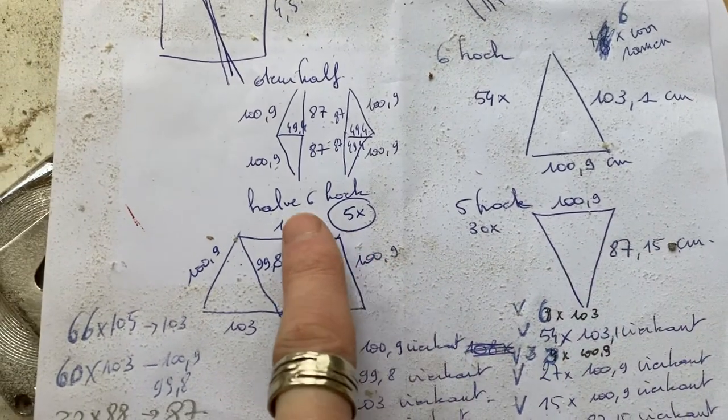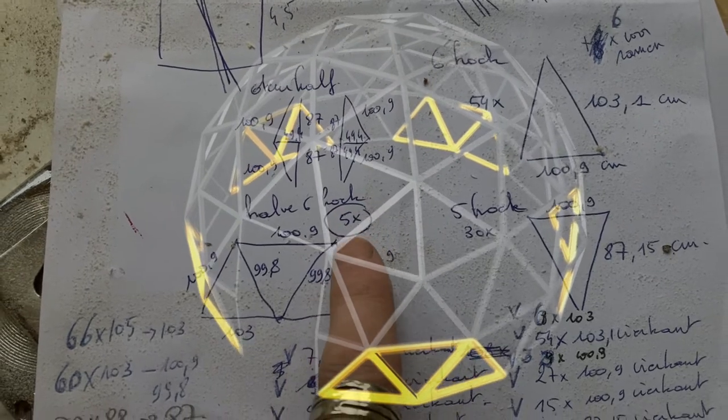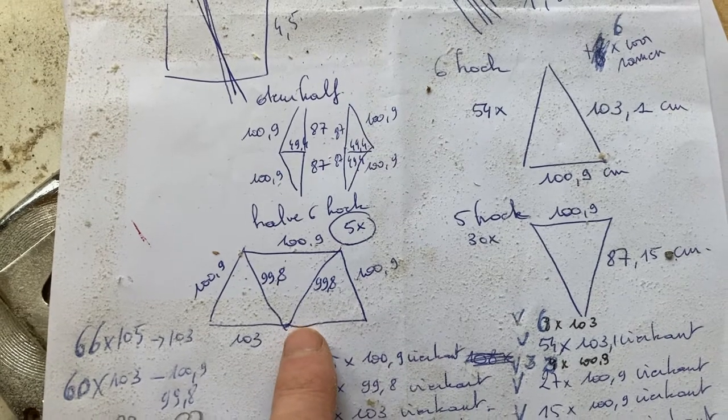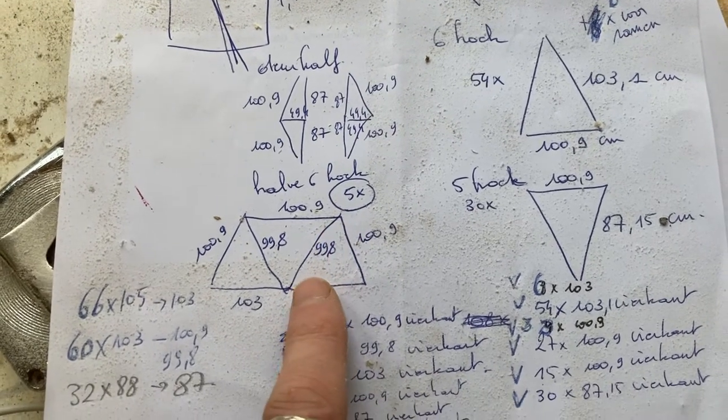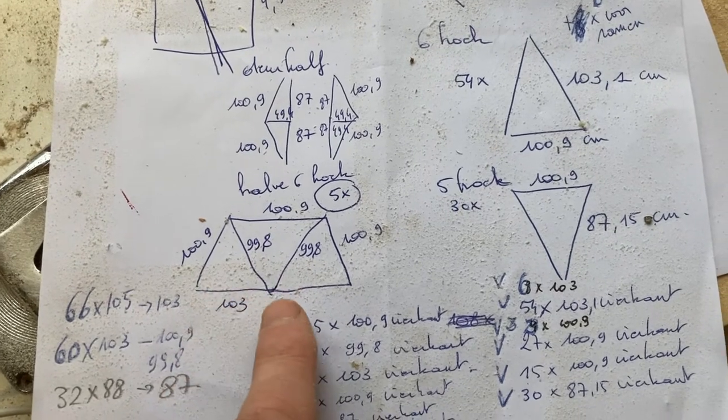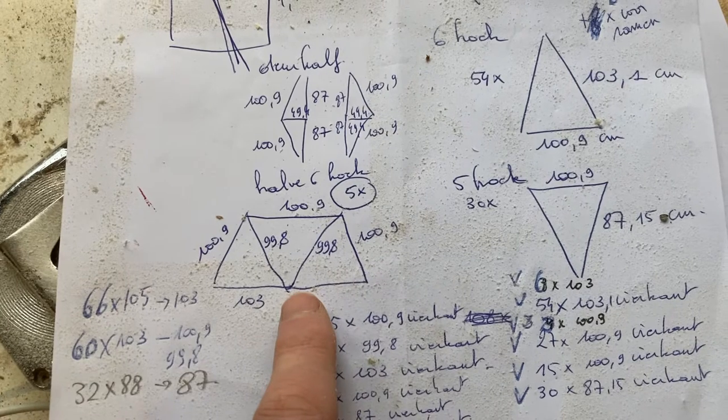Then I have half hexagons for the bottom row, which I changed slightly. This length is slightly shorter to compensate, otherwise I would not have a flat base.